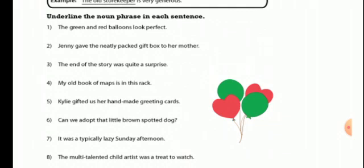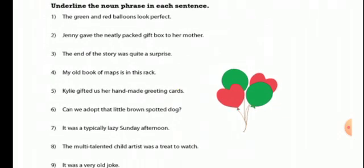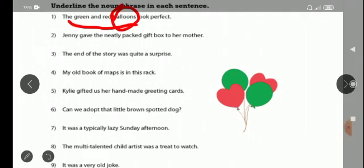Here what you all need to do is underline all the noun phrases. First of all, I'll say the first one: 'the green and red balloons.' Balloons is the noun. First you have to identify the noun and then...